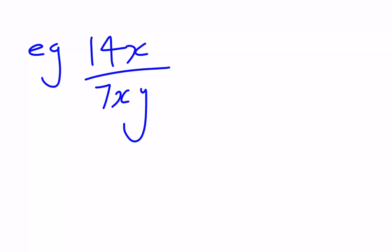Another example, here it's already in a fraction form, 14x over 7xy. Here, our highest common factor, we can see that we've got 7, but it's in fact 7x because we've got 7x on the top and the bottom.